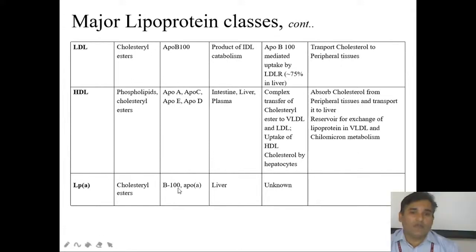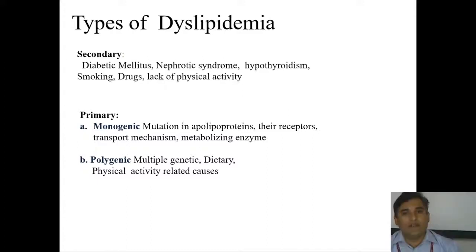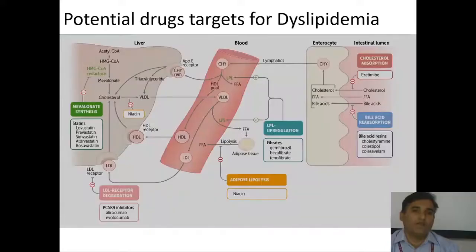Types of dyslipidemia: secondary dyslipidemia has no clear-cut reason — it may be due to diabetes mellitus, nephritic syndrome, hypothyroidism, smoking, drug use, or lack of physical activity. Primary dyslipidemia may be monogenic or polygenic — monogenic involves one gene, while polygenic involves multiple genes.